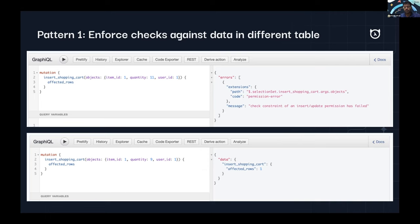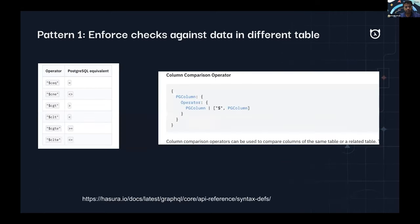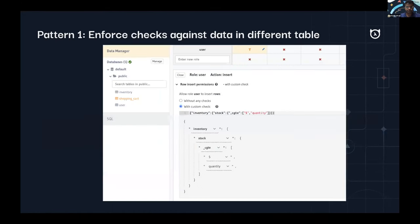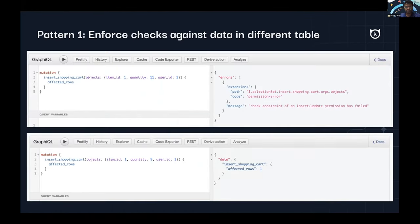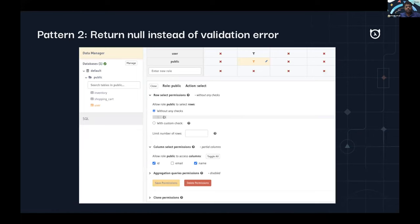That was the first pattern. I wanted to call this out because we recently enhanced an existing feature to span across different tables. Pattern number two is slightly specific to Hasura's implementation of GraphQL — I wouldn't call it a broad application pattern or security pattern, but it's still very useful to know.